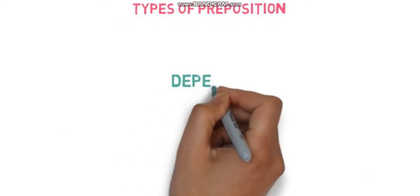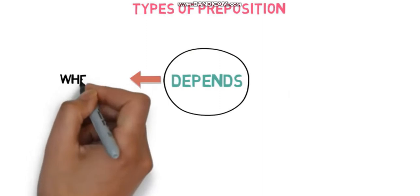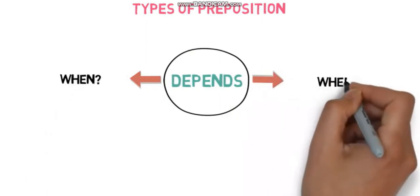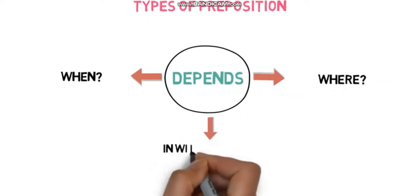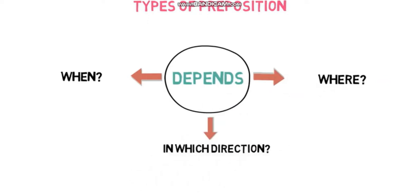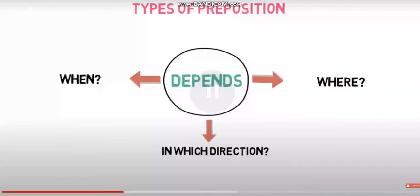Now let's look into the types of prepositions. These are divided into three types depending on three situations: when an event or thing happened, where the event or thing occurred, and in which direction the event or thing is happening. So the three types are: prepositions of time (when), prepositions of place (where), and prepositions of direction.